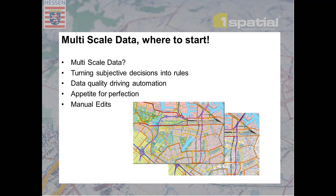Data quality is the biggest factor in achieving a high degree of automation. You could have the perfect roundabout collapse algorithm or the perfect dual carriageway collapse algorithm, but if your road network is not connected, you're not going to get great results. As an organization, you also need to look at your appetite for perfection — how good is good enough? There always comes a point with automation where there is a payoff between the investment made in automation and the cost of doing things manually.